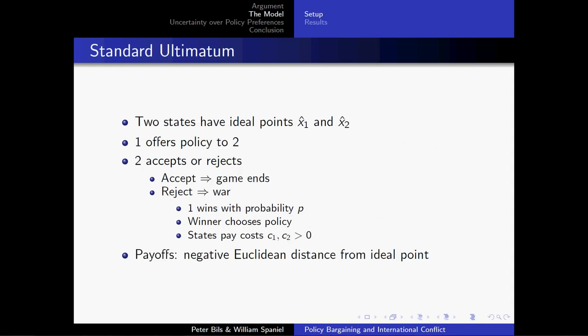All right, so let's start off by trying to figure out what's going on here. Let's model this situation where we're bargaining over policy. We're going to look at a standard ultimatum, a take-it-or-leave-it offer. So we have two states, each with different ideal points. State 1 has ideal point x-hat 1, and state 2 has ideal point x-hat 2. In an ultimatum, state 1 is going to offer a policy to state 2. State 2 will accept or reject that policy. Accepting ends the game with that policy implemented, and rejecting leads to war. We have war as a costly lottery here. State 1 will win with probability P. State 2 will win with complementary probability. The winner becomes the dictator of the universe and will be able to choose whatever policy it wishes. And the states are going to pay respective costs, C1 and C2, if they fight.